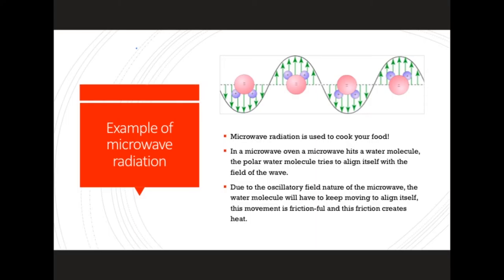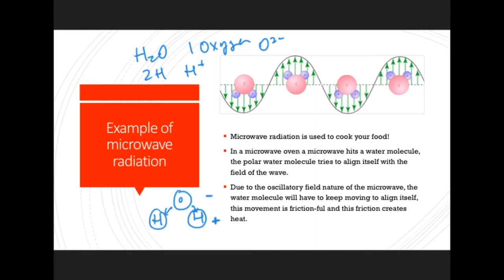A water molecule H2O contains one oxygen O, which is charged two minus, and two hydrogens, each charged positive one. If we look at the structure of the water molecule, we will see that water has a positively charged side and a more negatively charged side. This is what makes the water molecule polar. The poles of this water molecule are what try to align itself with the electric field from the microwave.